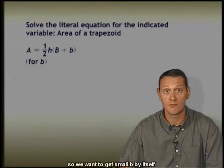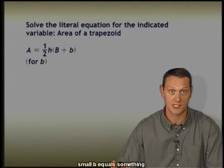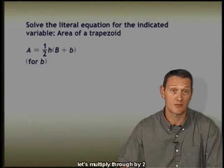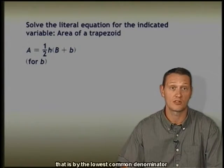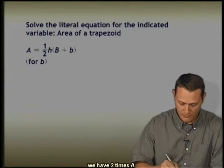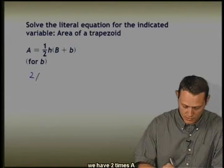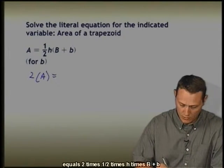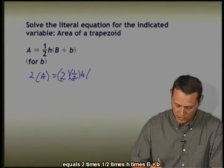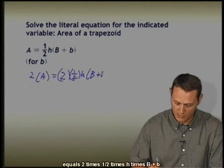We want to get small b by itself, so small b equals something. Let's first get rid of the fractions by multiplying through by 2, the lowest common denominator. We have 2 times A equals 2 times one-half h times the quantity capital B plus small b.